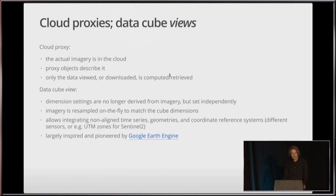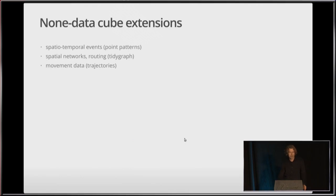Cloud proxies. Something that we have in mind is where the data are basically not in your local machine but in the cloud. And the next idea is that of a data cube view, where you basically have dimension settings that you don't read from an image, but that you set independently. And we basically query the imagery on this setting. So you could have a collection of images that are in different projections, like you typically have with Sentinel or Landsat data, that they are over different UTM zones. An idea that is pioneered and inspired by Google Earth Engine, a very strong platform.